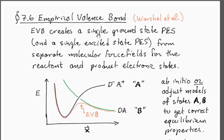Empirical valence bond is a strategy for constructing a single ground state potential energy surface. It also gives you a single excited state potential energy surface from the separate molecular force fields for the reactant and the product electronic states.